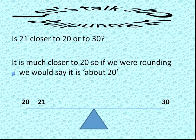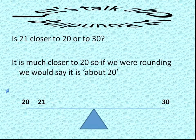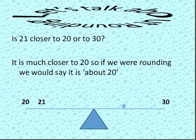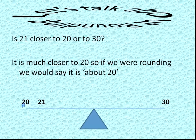So is 21 closer to 20 or to 30? I put a scale here so we could look at it. If 20 is here and 30 is here, 21 is much closer to 20. So because it's closer to 20, if we were rounding, we would say it is about 20.